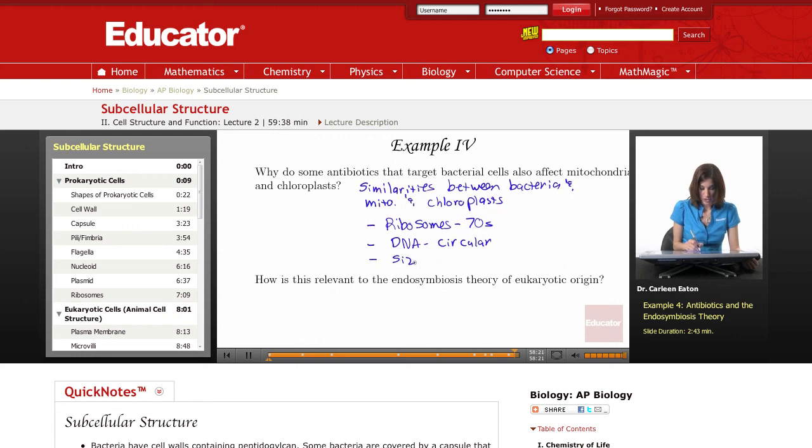Size. Mitochondria and chloroplasts are smaller. Eukaryotic cells are larger. So these similarities could cause an antibiotic to affect all three cell types.